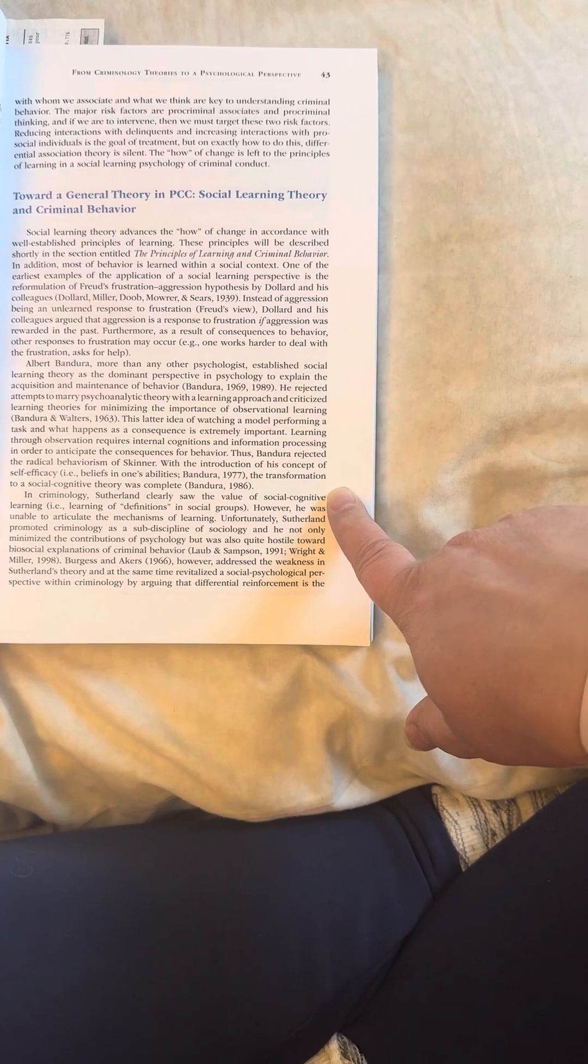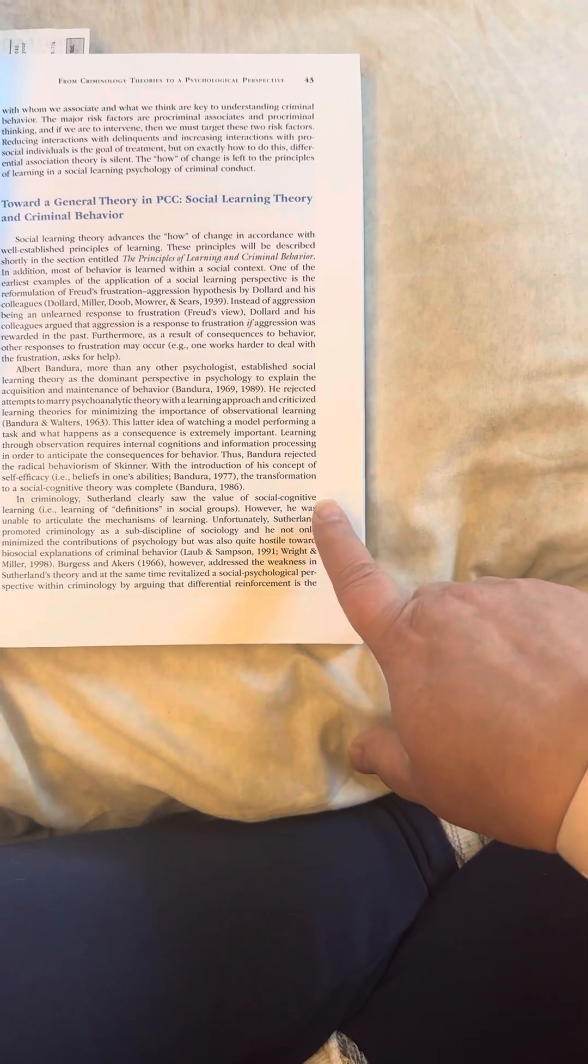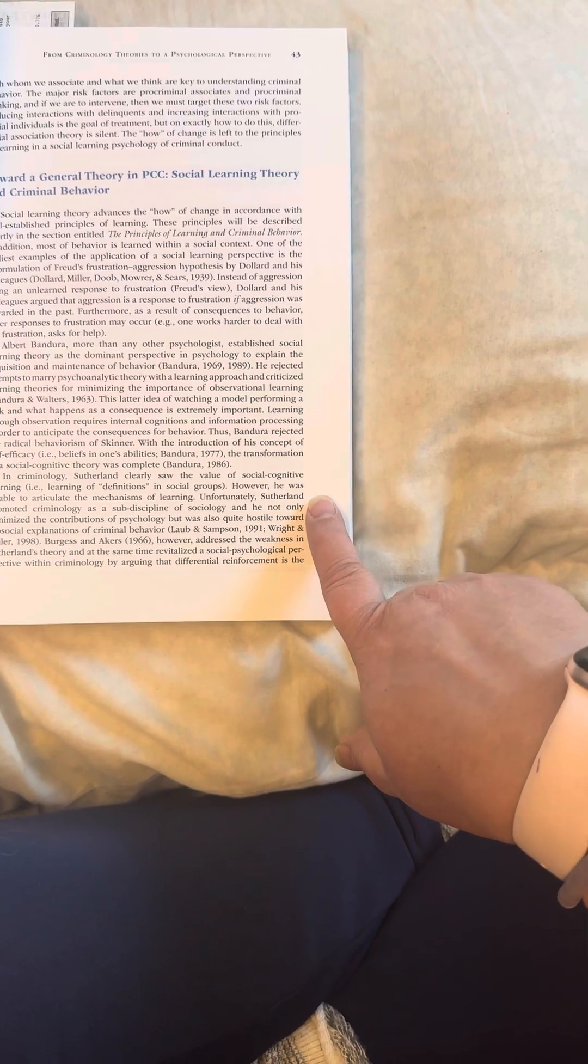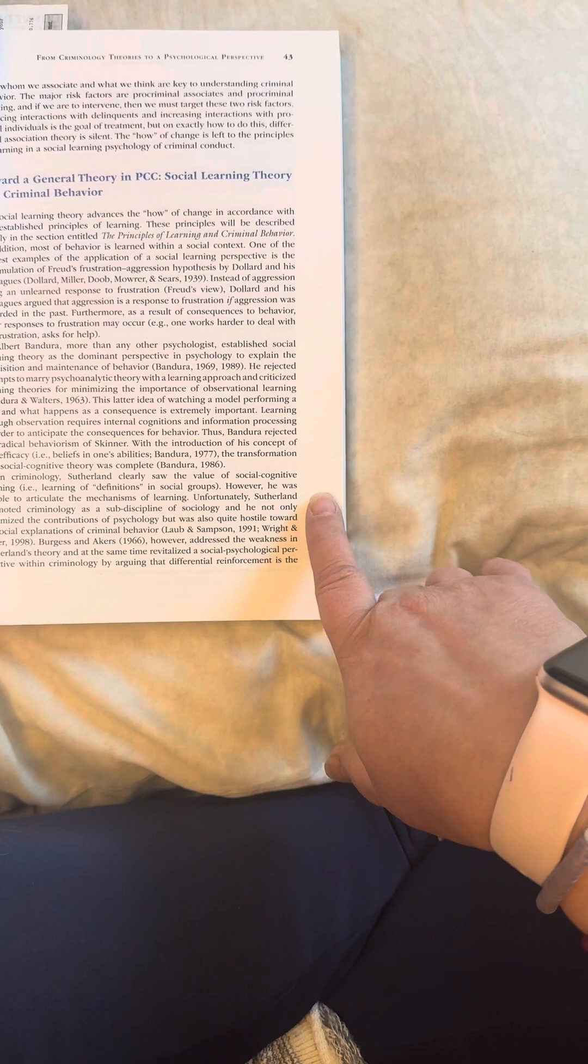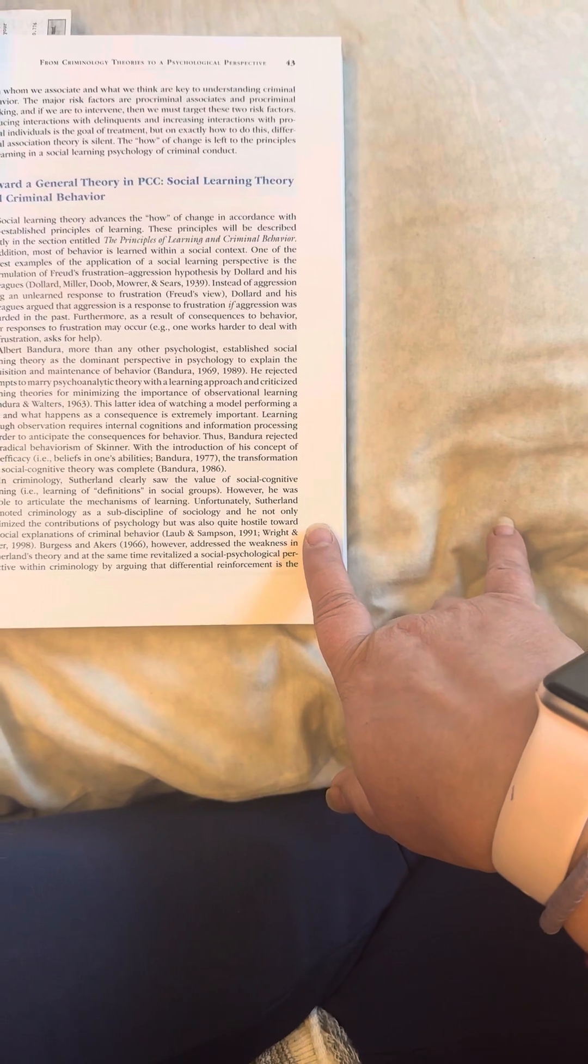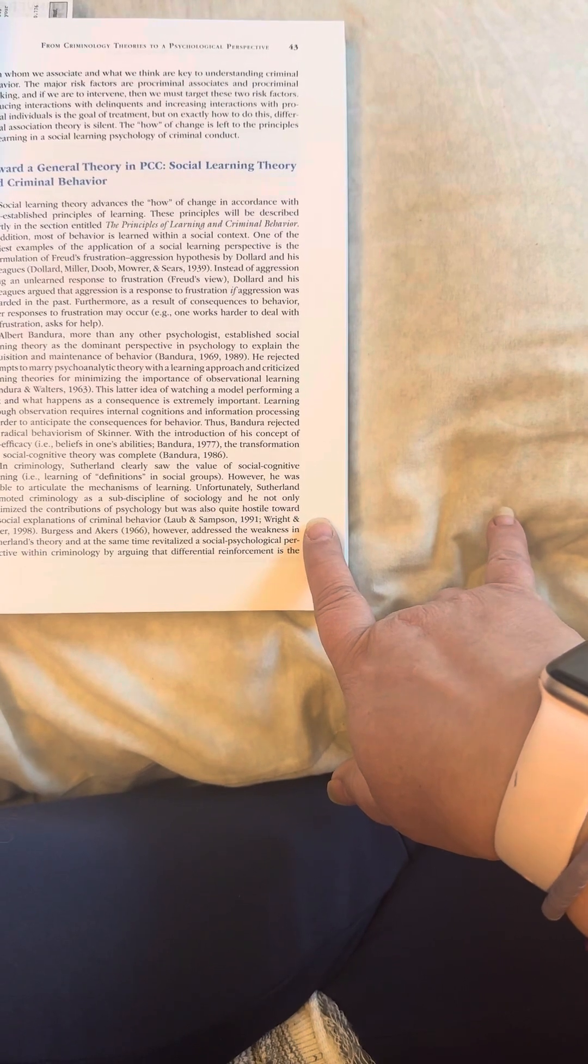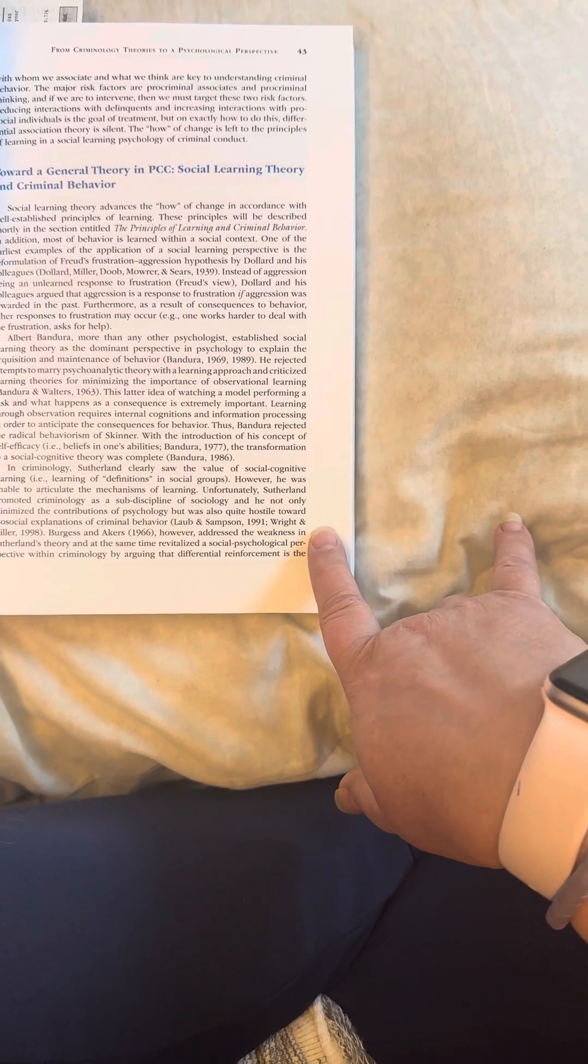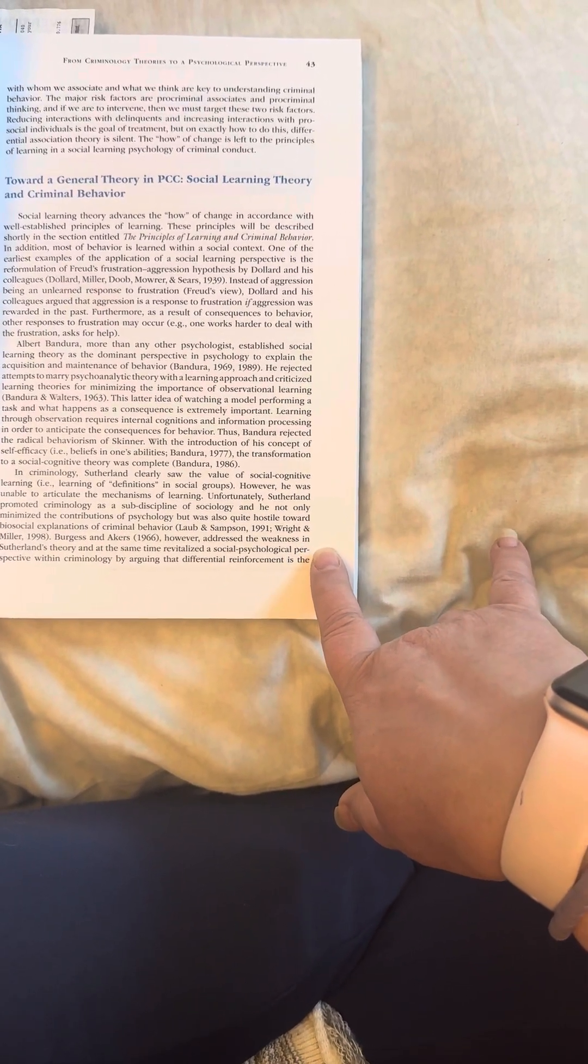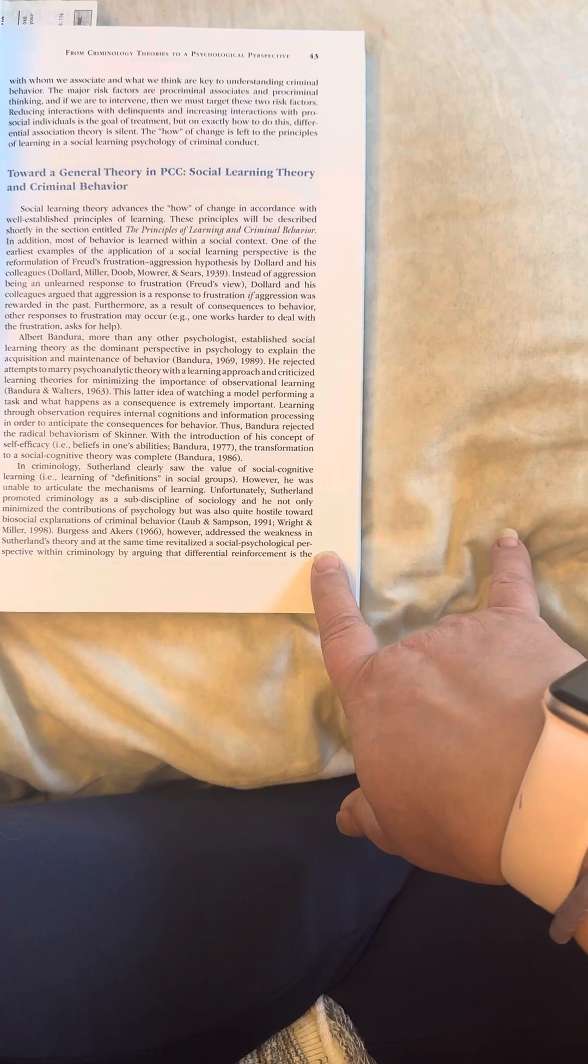Learning through observation requires internal cognitions and information processing in order to anticipate the consequences for behavior. Thus, Bandura rejected the radical behaviorism of Skinner. With the introduction of his concept of self-efficacy, i.e., beliefs in one's ability, Bandura in 1977, the transformation to a social cognitive theory was complete. In criminology, Sutherland clearly saw the value of social cognitive learning, i.e., learning of definitions and social groups. However, he was unable to articulate the mechanisms of learning. Unfortunately, Sutherland promoted criminology as a sub-discipline of sociology, and he not only minimized the contributions of psychology, but was also quite hostile toward biosocial explanations of criminal behavior.